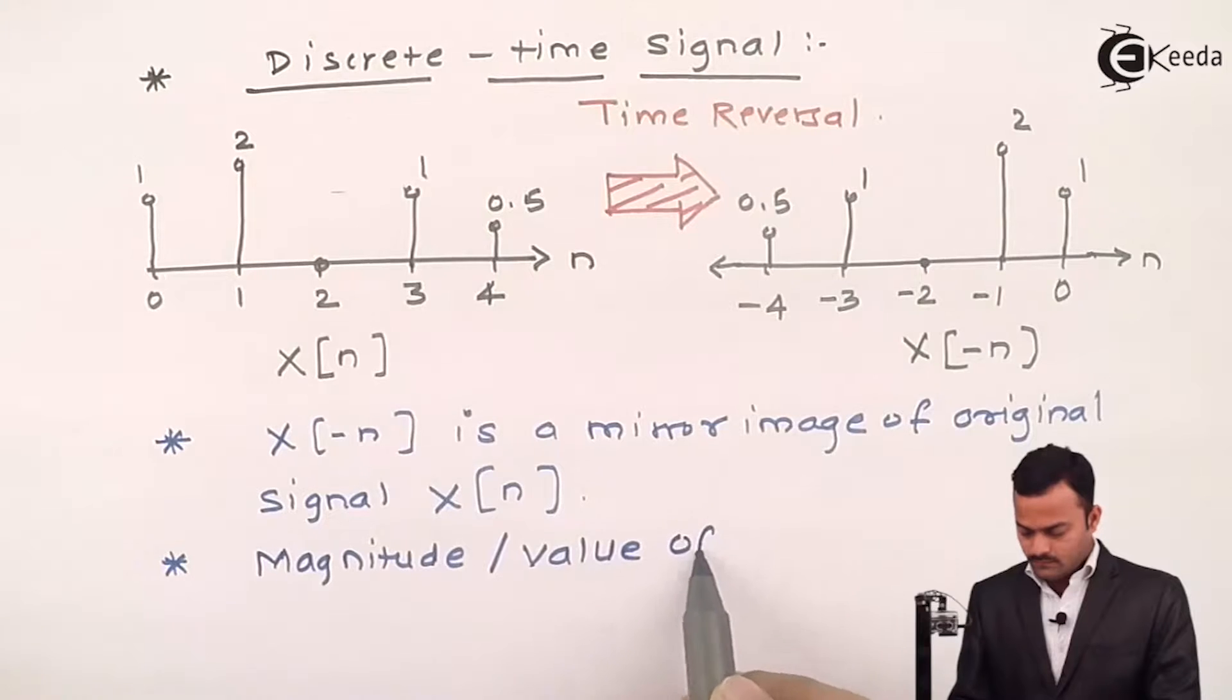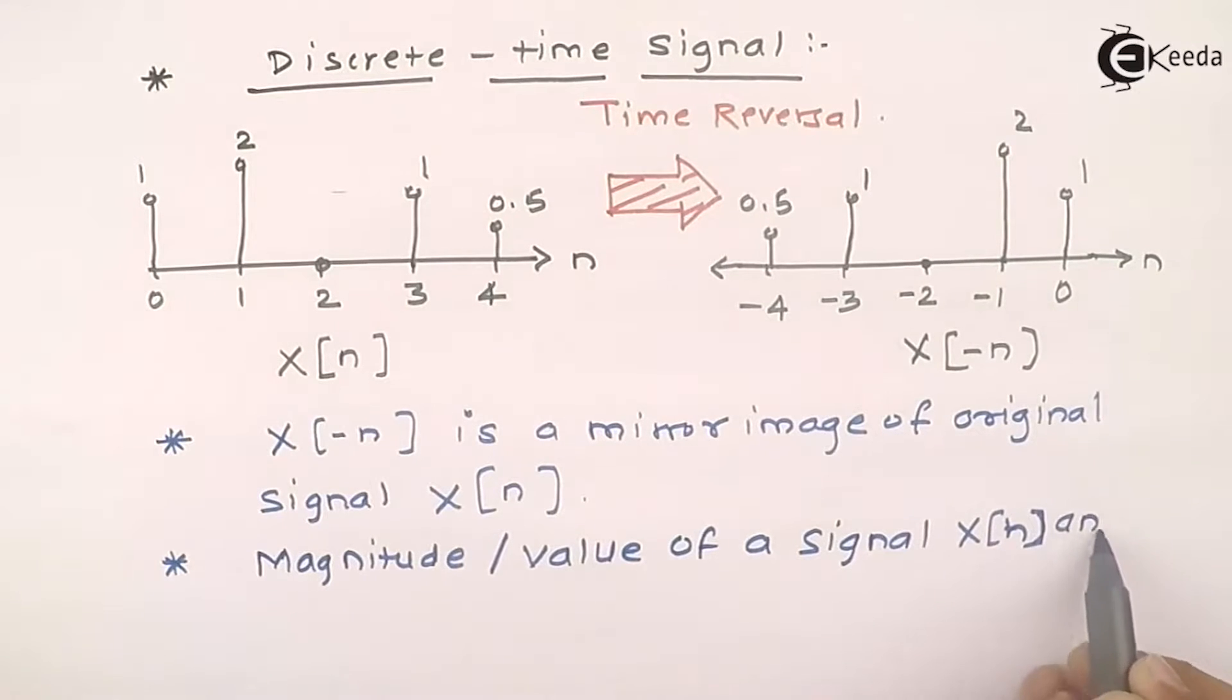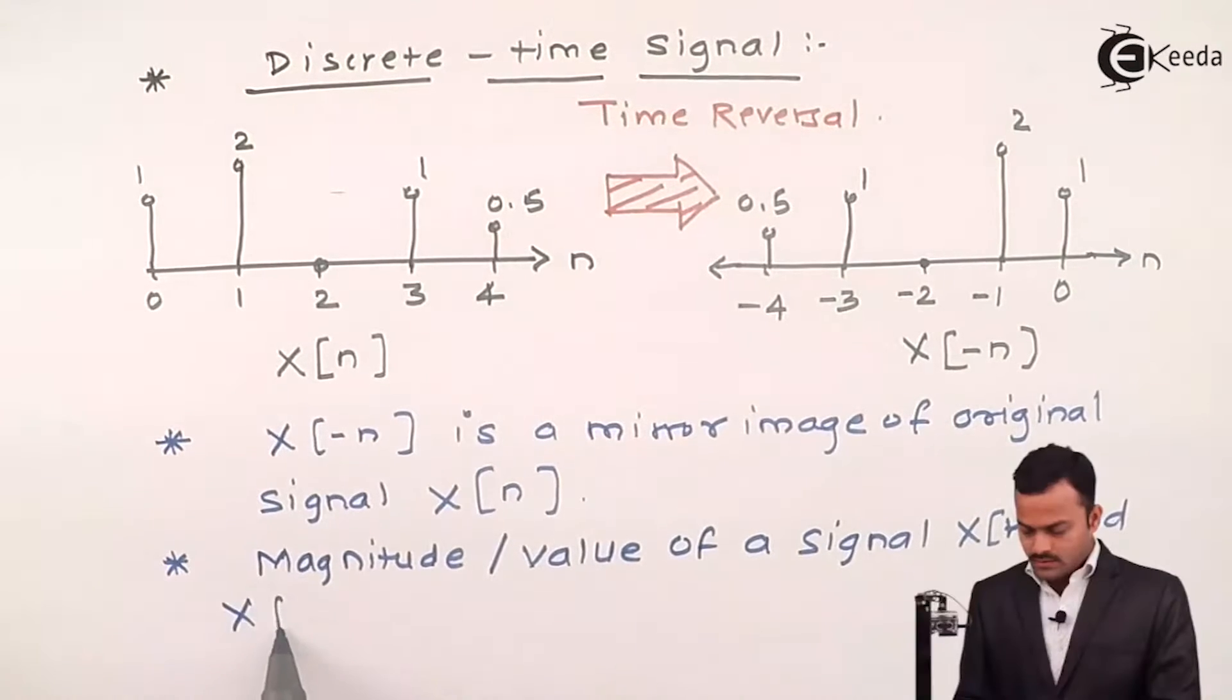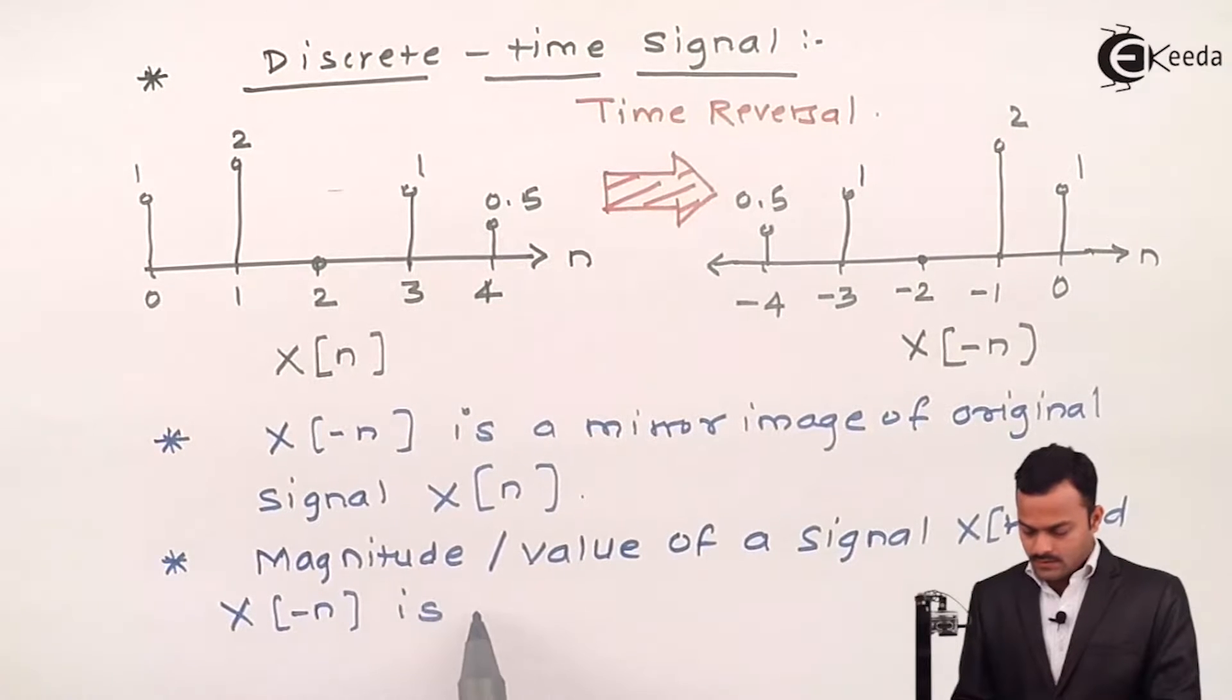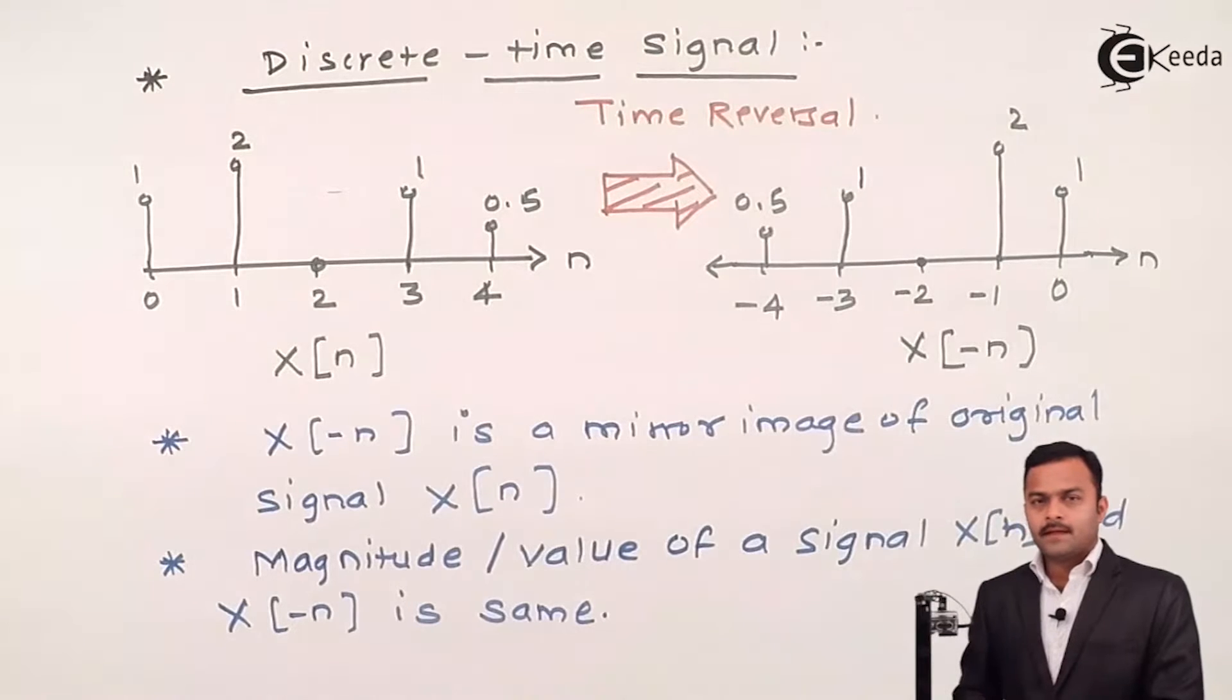So this is a simple property or operation of a signal which we call as time reversal where original signal will get transformed into its mirror image. Thank you.